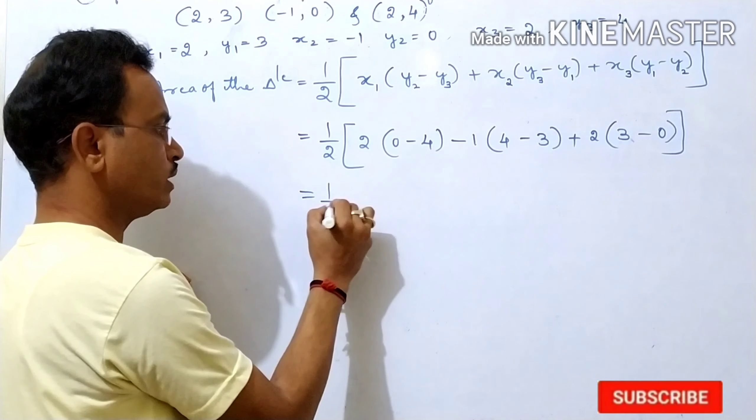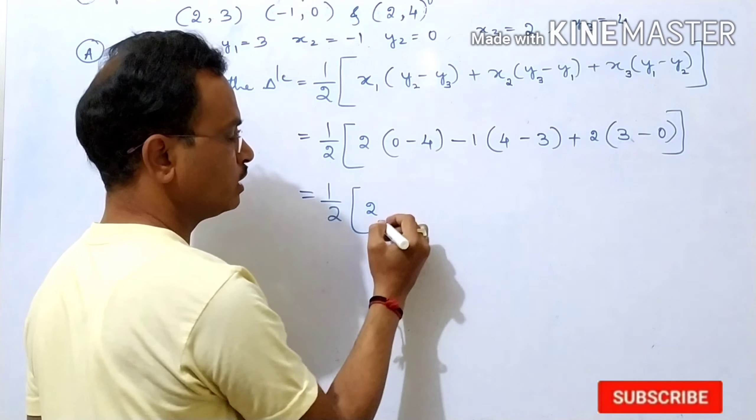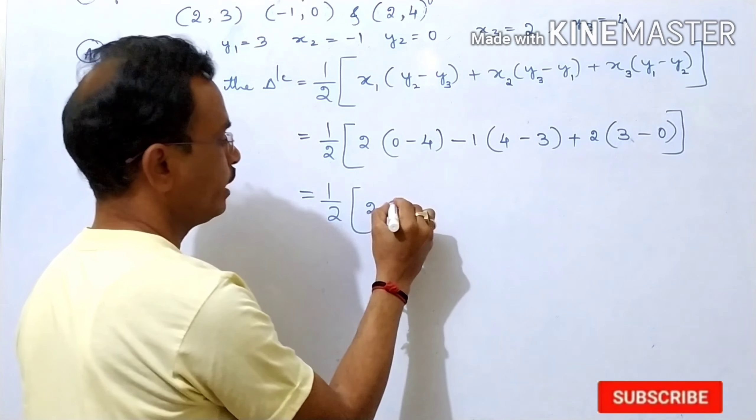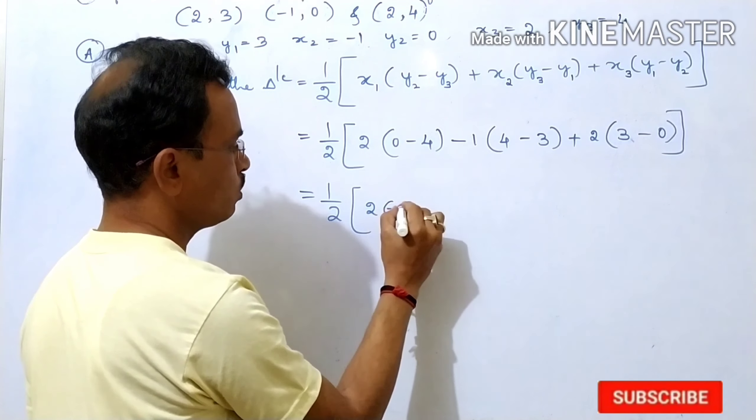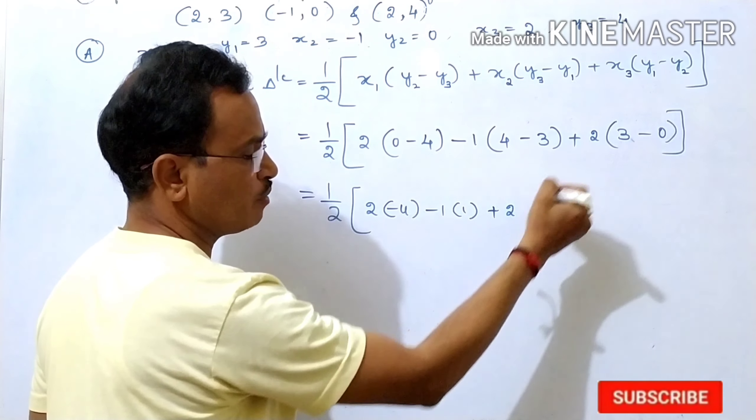Then 1 by 2 as it is. This 2, 0 minus 4, that is equal to minus 4. Then minus 1, 4 minus 3 is 1, plus 2 into 3, minus 0 is 3.